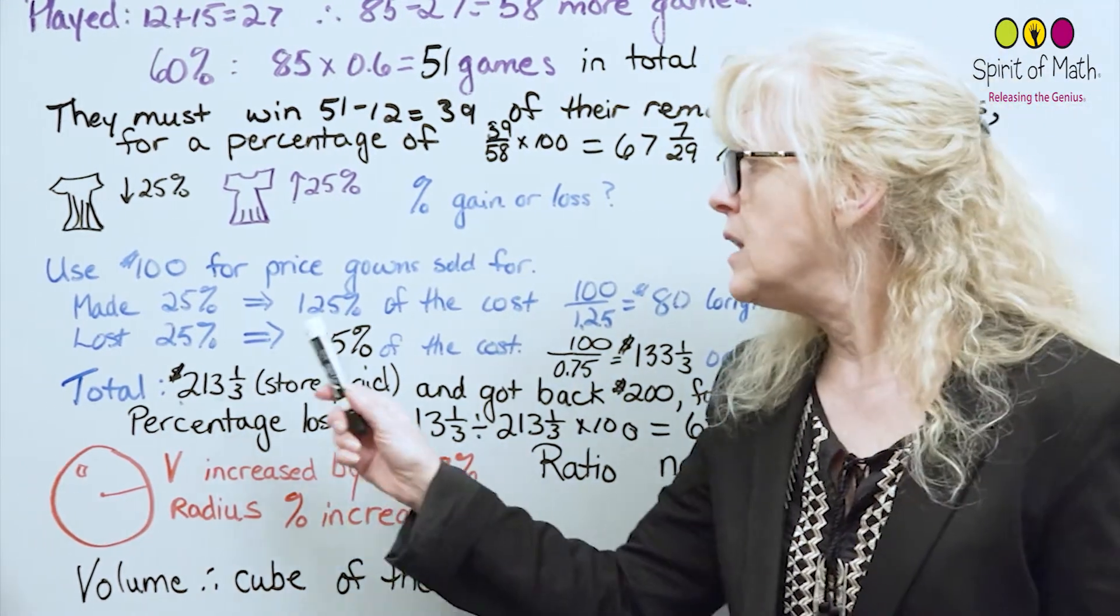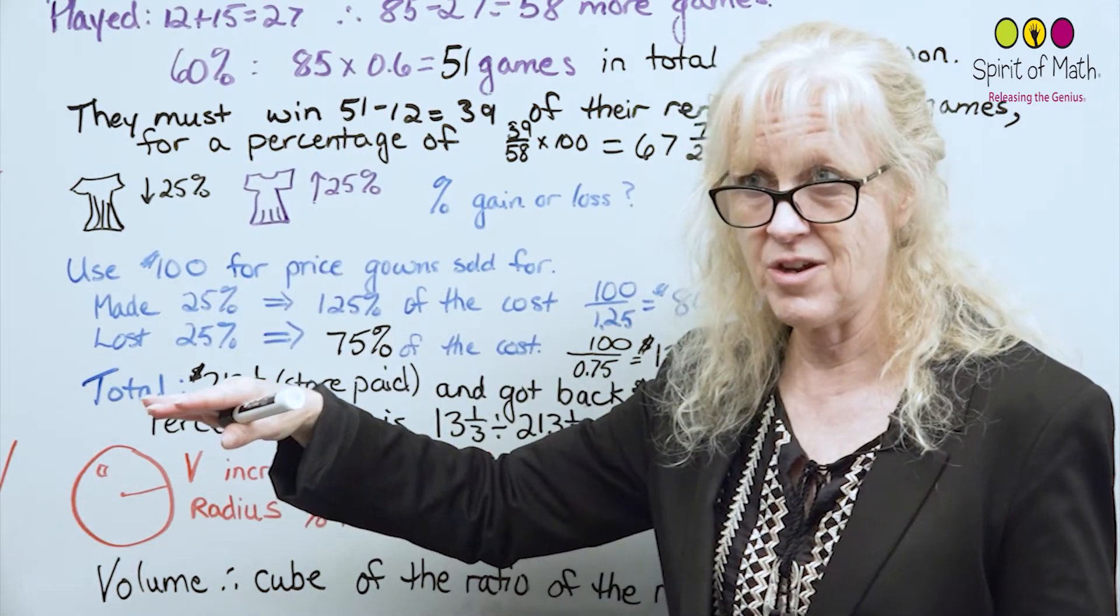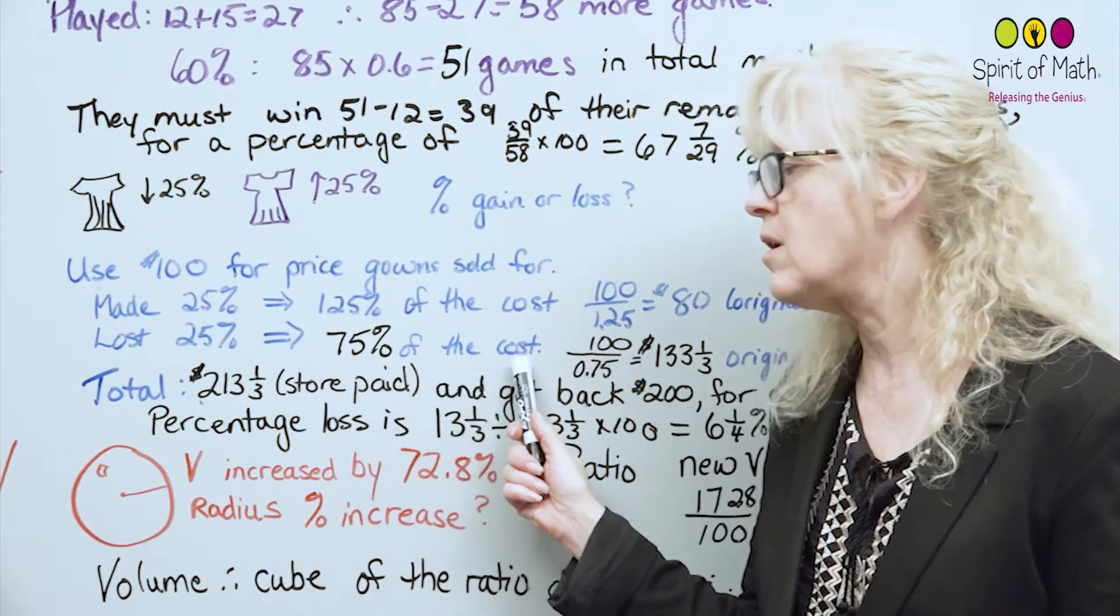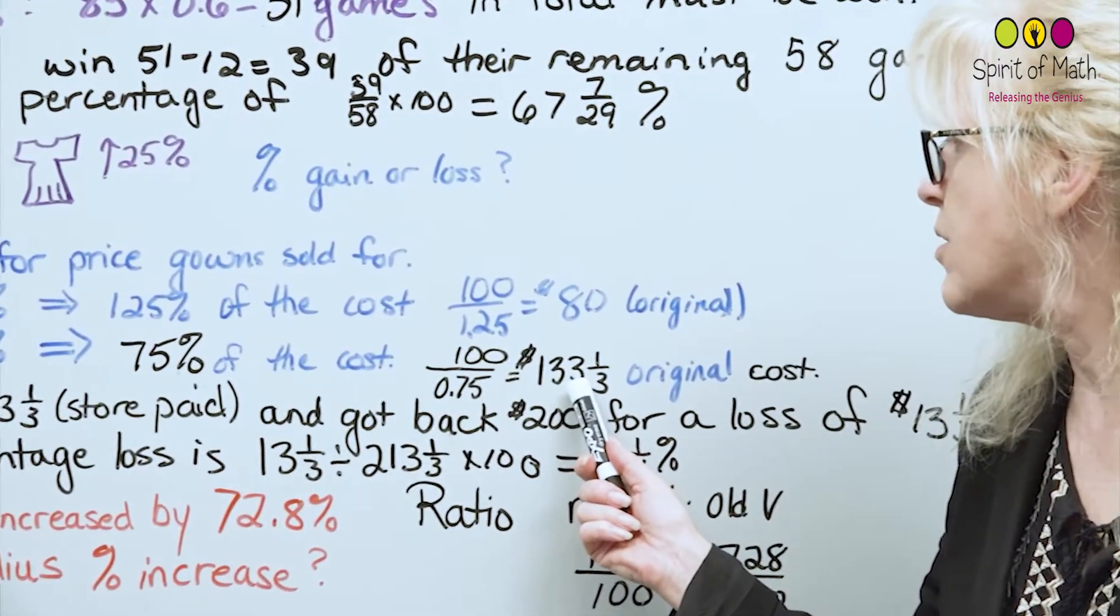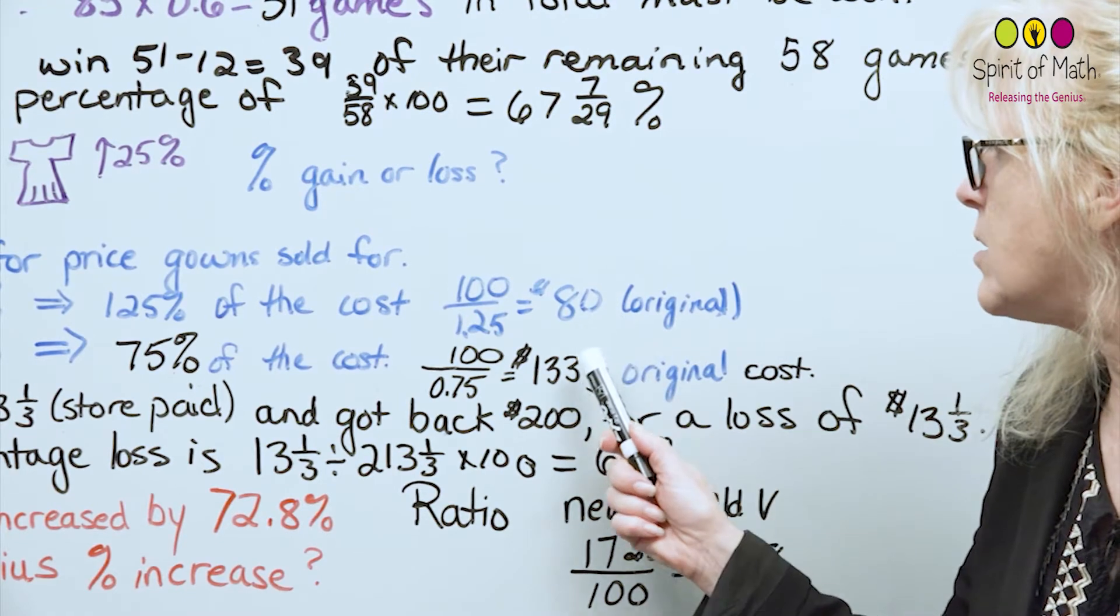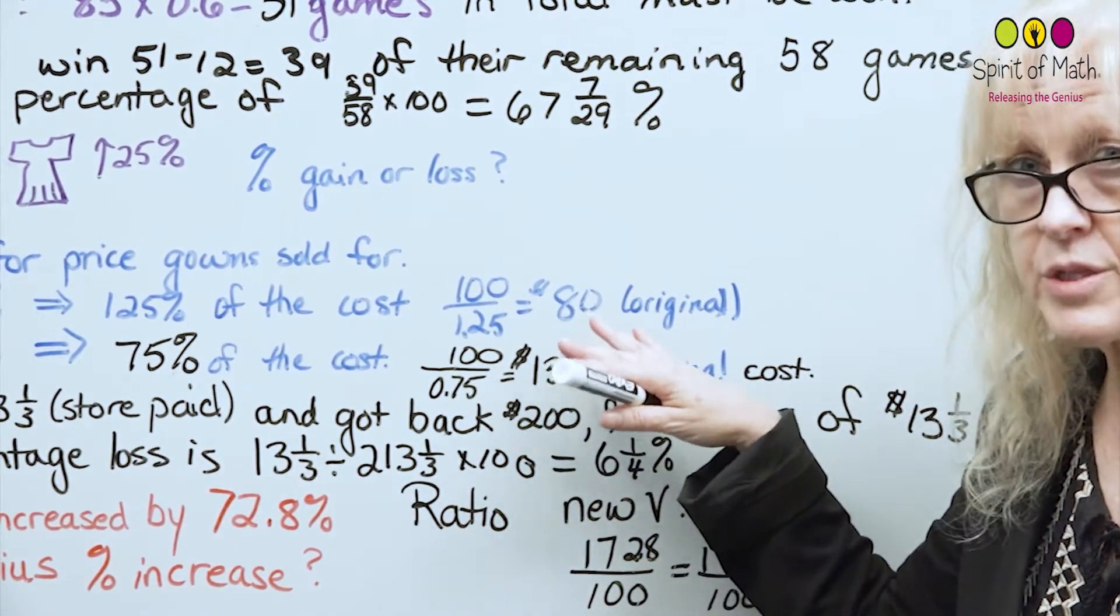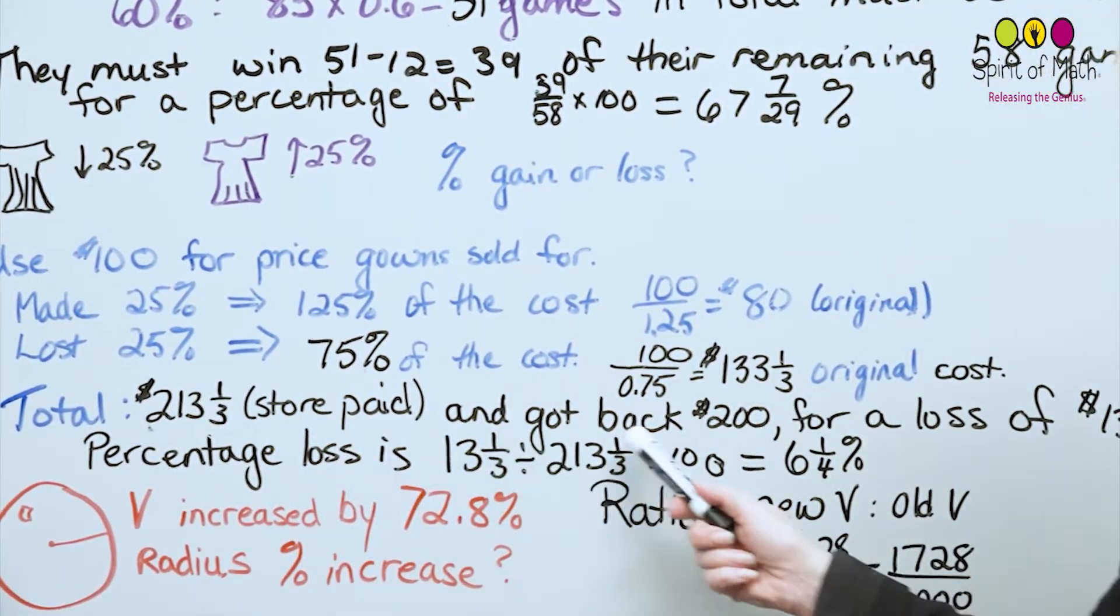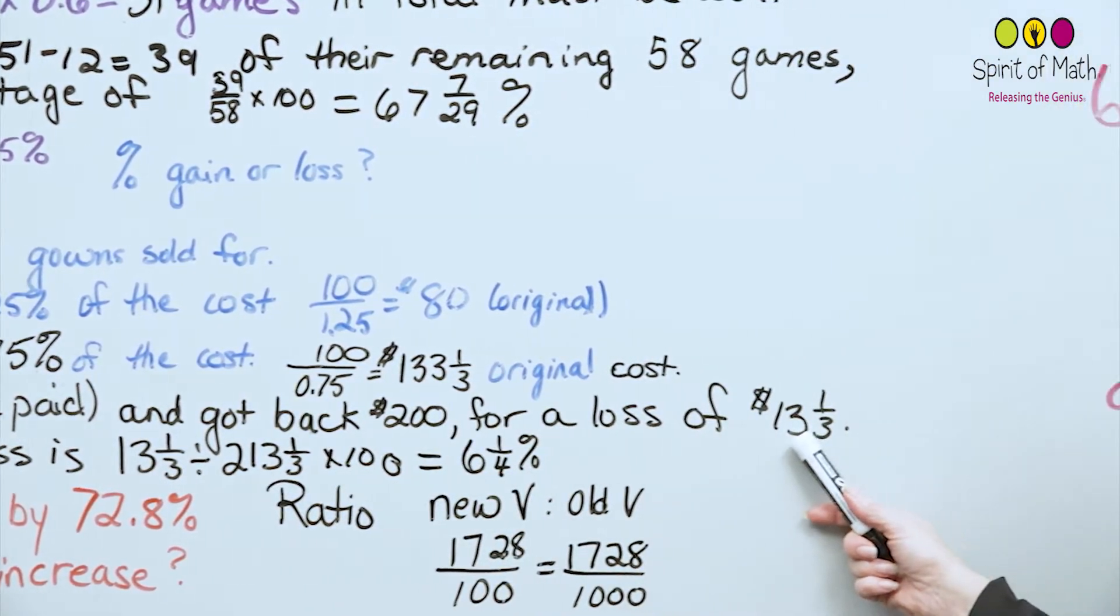For the next one, they lost 25%. So in other words, the gown must have cost them more, and they only sold it for $100. So it would have to be greater than $100. If they lost 25%, that $100 is 75% of the cost. So basically, 100 divided by 0.75 gives you $133.3 repeating dollars. That was the original cost. So now you have $80 plus $133.3 in the original cost that the store would have had to pay. And that total is $213 and one-third. So that's how much the store paid. They got back $200, because that's the cost of each gown, 100 plus 100.